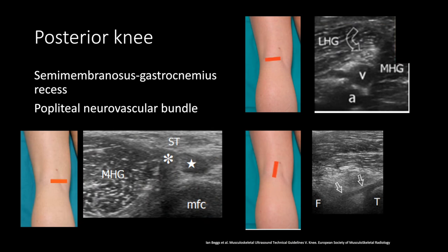Have the patient prone with the knee extended for evaluation of the posterior knee. Check the semimembranosus and the gastrocnemius recess between the medial head of the gastroc, where the tendon is denoted by the asterisk, and the semimembranosus tendon is denoted by the star. At the popliteal fossa, you can examine the popliteal artery, the vein, and the tibial nerve. The artery is A, the vein is V, and the curved arrow is the tibial nerve. At the bottom right, you can sometimes see part of the posterior cruciate ligament.